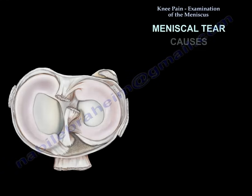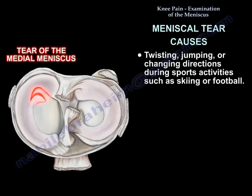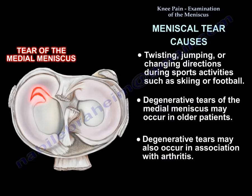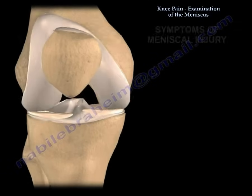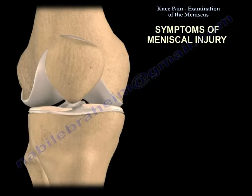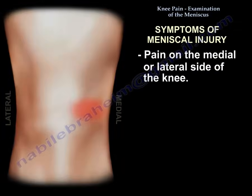Causes of meniscus tear include twisting, jumping, or change in direction, especially in sports or skiing. The tear may be degenerative as in older populations. The tear may also occur in association with arthritis. Symptoms include pain at the medial or lateral side of the knee.